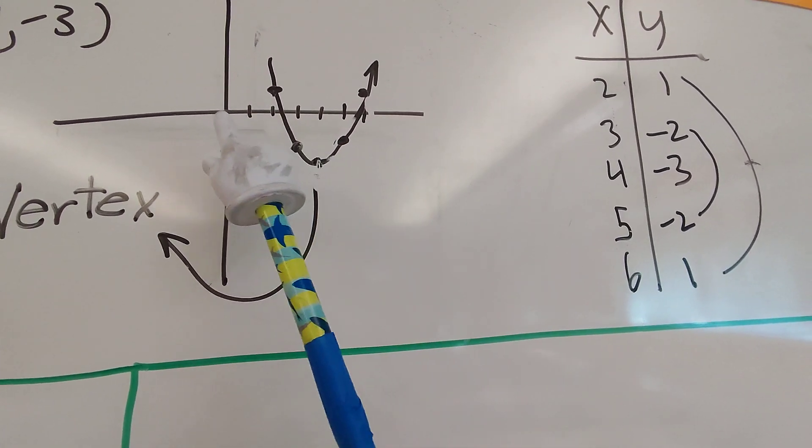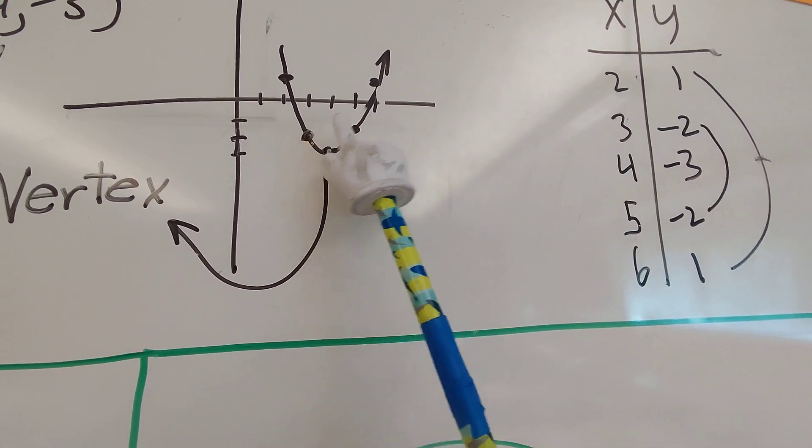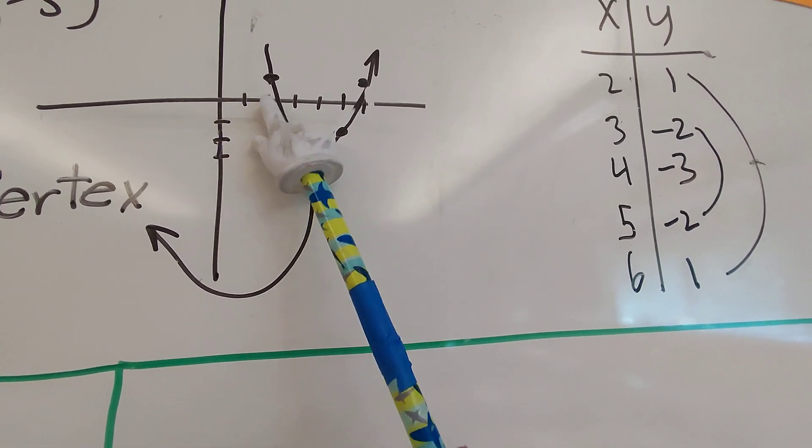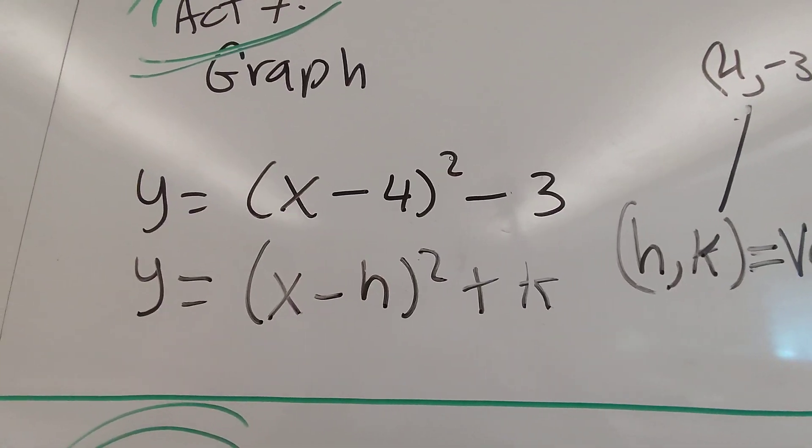Then 3, down negative 2 for this point. And finally 2, 1 for the last point. And that makes my parabola. And I graphed this equation.